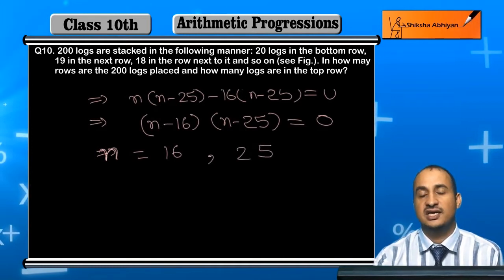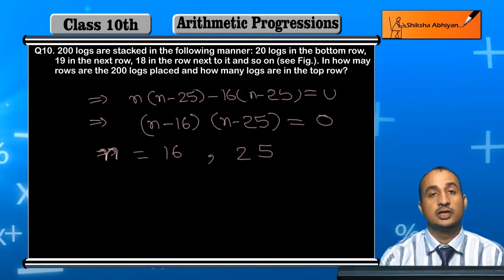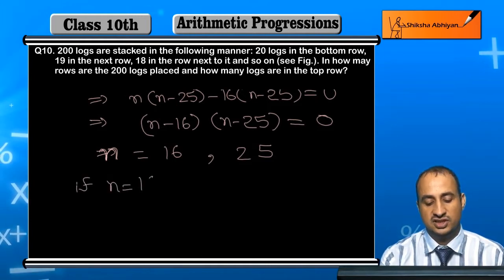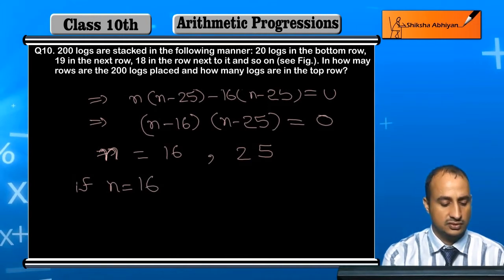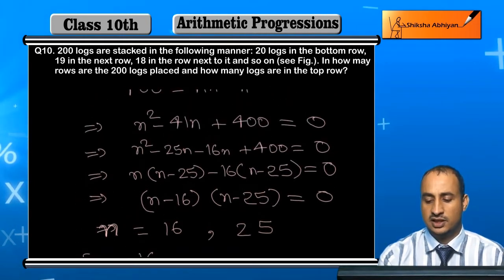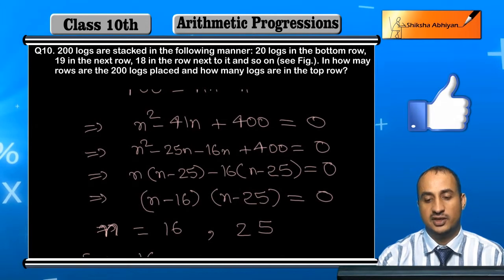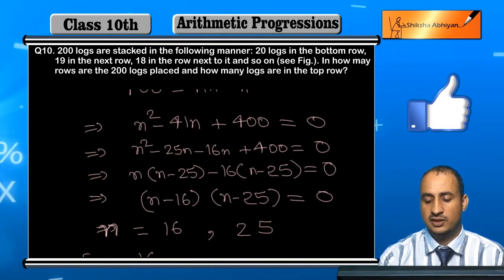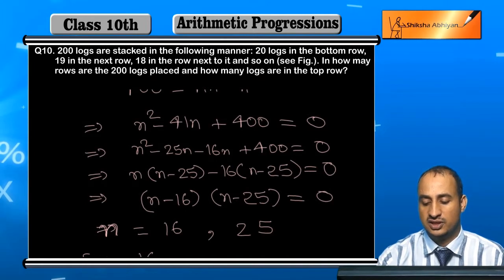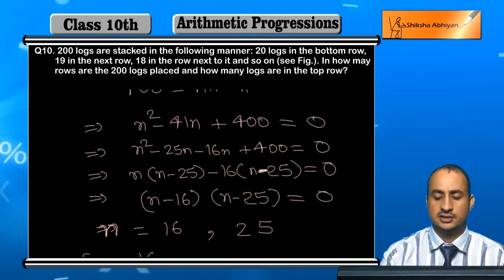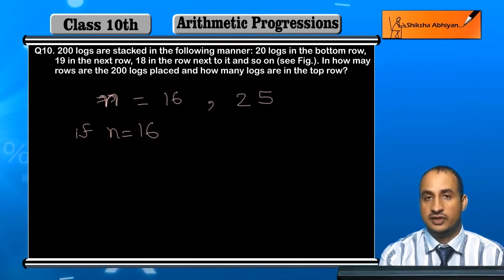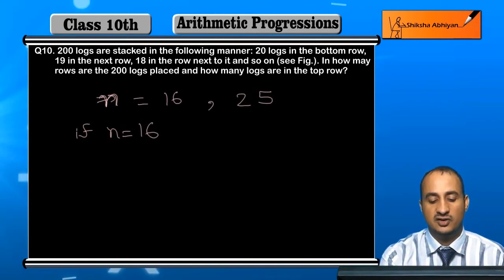Now students, when n is equal to 16, if n is equal to 16, then there are 16 rows. Then in the top row, what would An be?